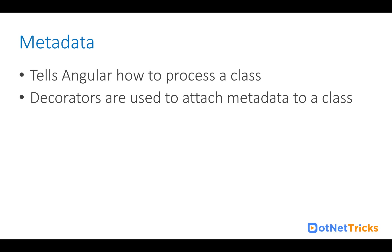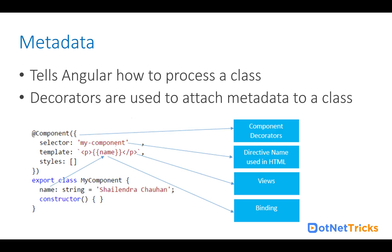At the class level we use decorators, and using the decorators we use a metadata object to describe that class. The metadata can be understood with the help of this diagram. You can see here we have the component decorator, and this component decorator has a single object with properties.